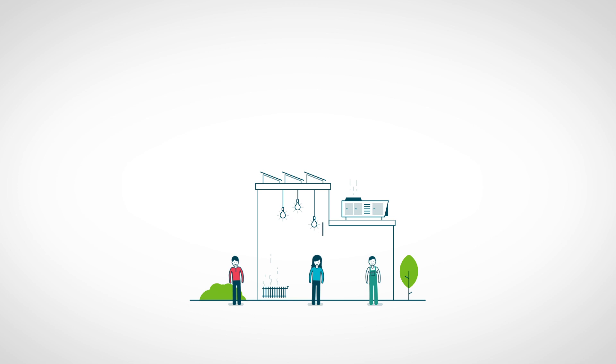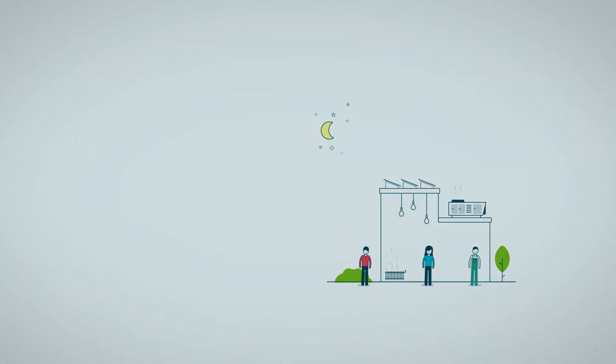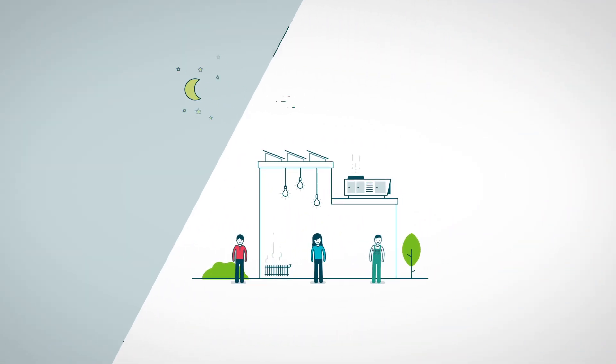PrivaEco creates a digital representation of your building, a twin, with the same characteristics and properties as the real building. The twin reacts to simulated changes in exactly the same way as the real building would. This provides us with the option of running test scenarios to continuously improve the system.